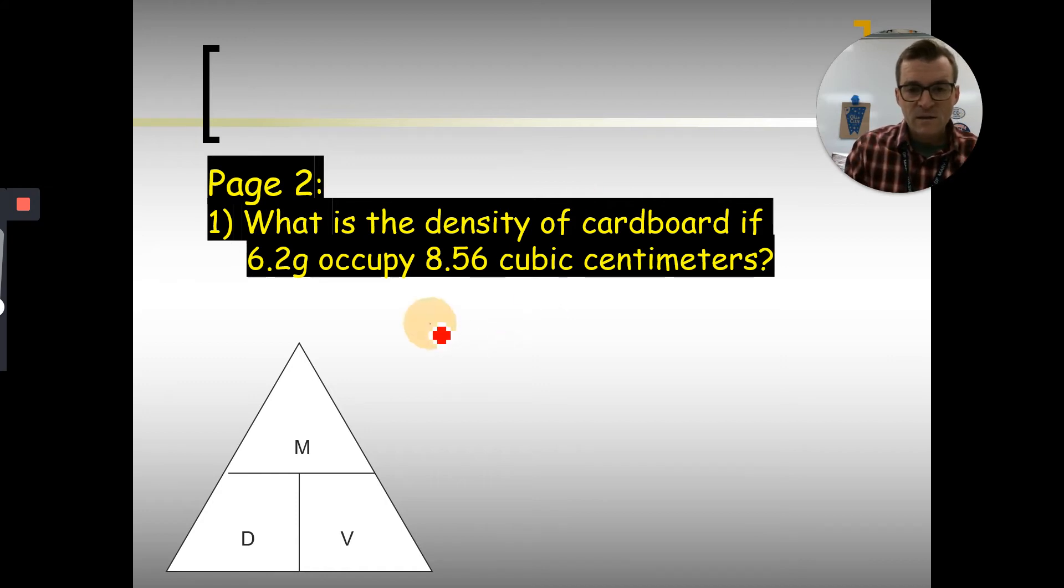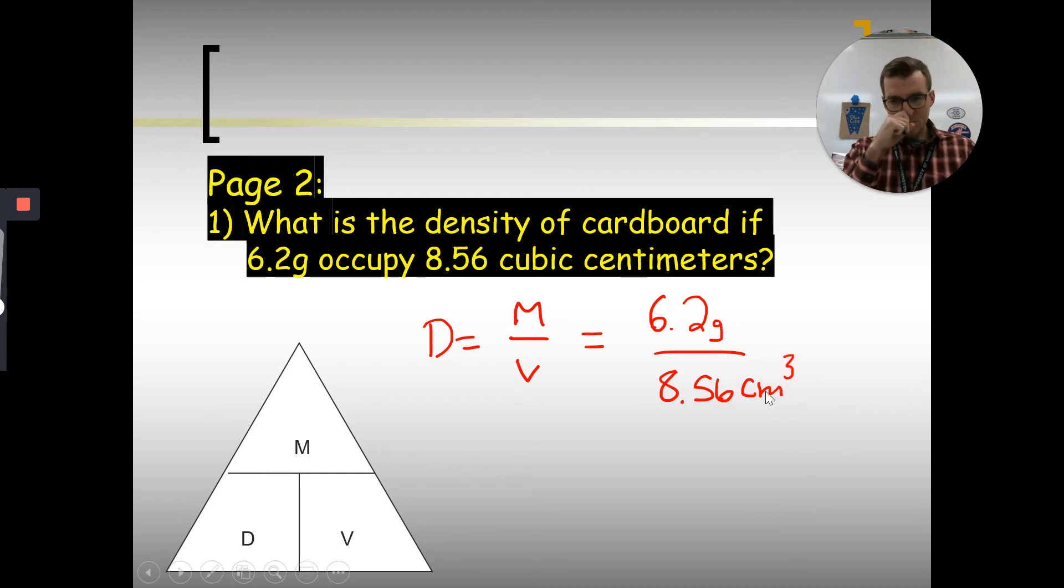This is where knowing units is important. If we're asked to find density, you know density is mass over volume. So if we pay attention to our units, oh, we know grams is mass. That's why I started that early in the video. Divided by our volume of 8.56 cubic centimeters, which would be cm cubed. So obviously, just 6.2 divided by 8.56. And if I had to pay attention to significant figures, there should be two of them.